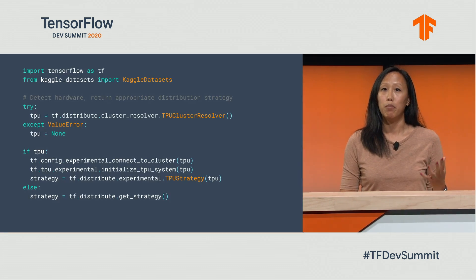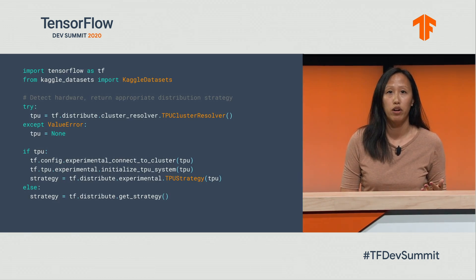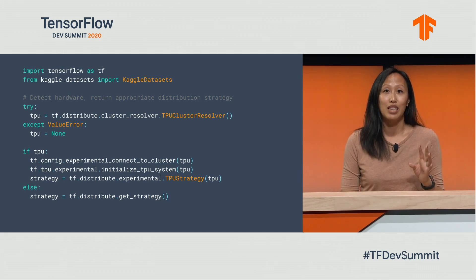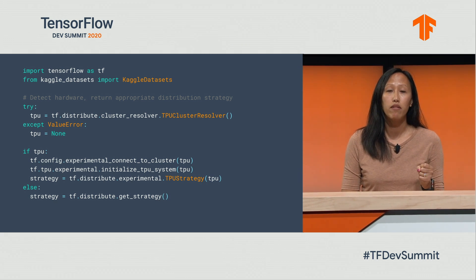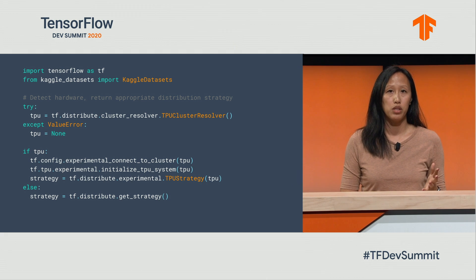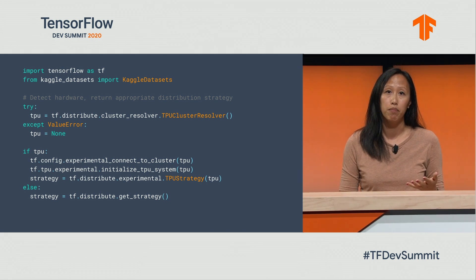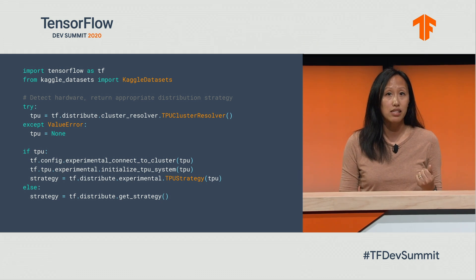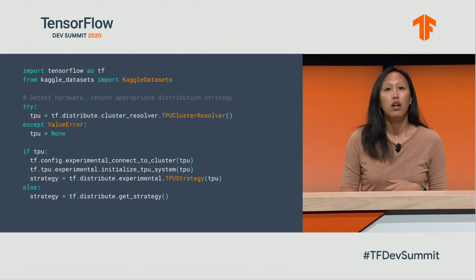So we start off simple: import TensorFlow and the Kaggle data sets library. The rest of the code here does a little bit of magic — it figures out what kind of accelerator is attached to your VM and automatically parallelizes your model building. This will return an appropriate strategy whether you're using a V3 TPU or a simple CPU VM. Basically, this code asks for a TPU; if it gets one, it connects it. If it doesn't, it sets that up as well.